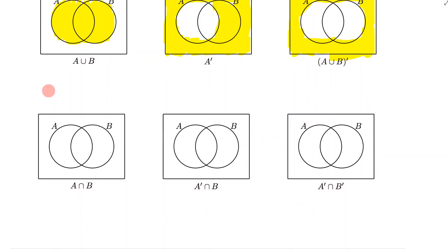We continue with A intersection B. This is just the portion for which they overlap — where they intersect. It's just that part right there.